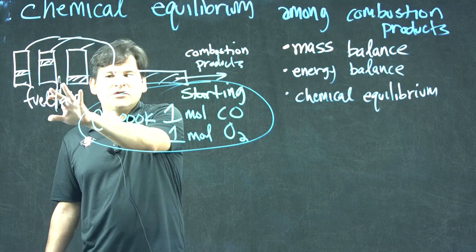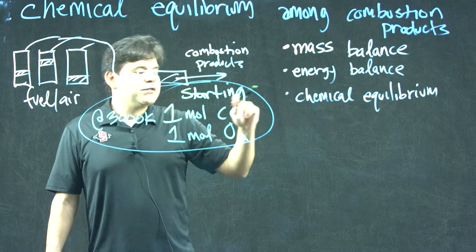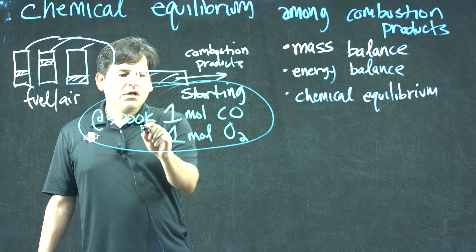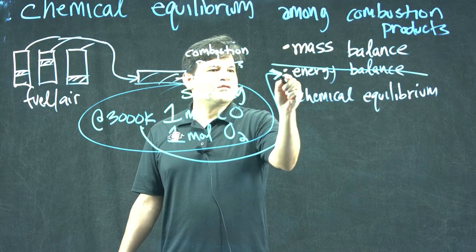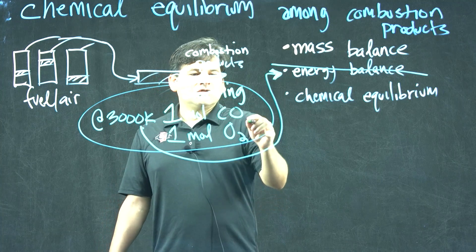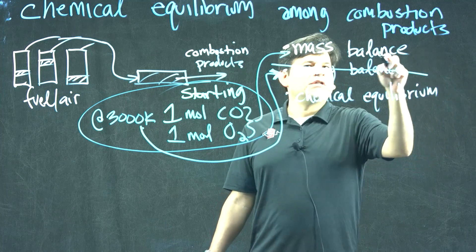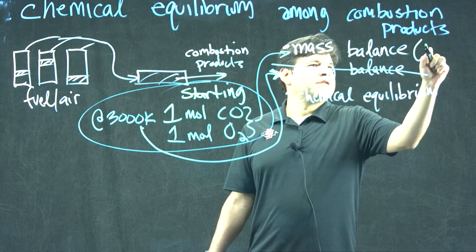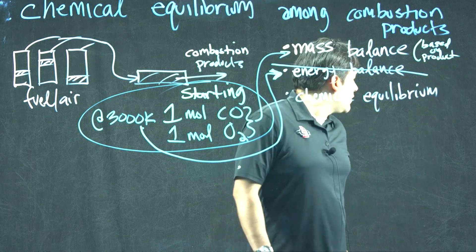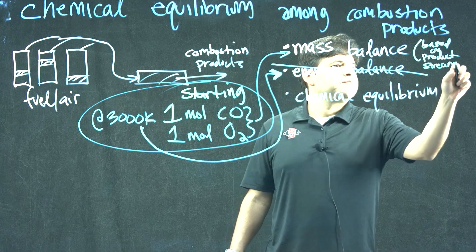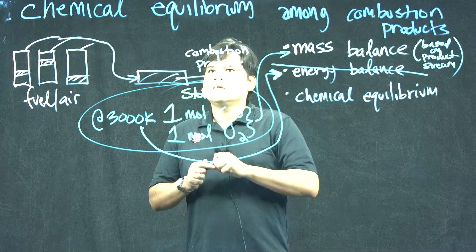If we're given the fuel-air mixture, we'd have to figure that out first. But in this problem, we're only given the product stream, which is what we need for the chemical equilibrium. And since we're given the temperature, we don't need the energy balance — we already know the temperature. That's what the energy balance is usually for. Because we have this starting point, the mass balance based on the fuel stream is not needed. This problem is based on the product stream. We still need the chemical equilibrium.